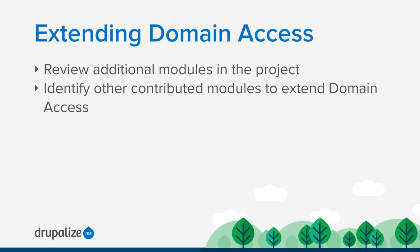In this short introductory series on domain access, we've covered a lot of the major features. We got everything installed properly, then looked at how to manage content — creating content, sharing content, keeping it within a particular domain. We also looked at how to deal with various settings so we could change things per domain, like the home page node. We also changed the theme for the alumni site and looked at permissions, which is a large part of what domain access provides at its core — helping us slice up one Drupal site into multiple sites using different domains.